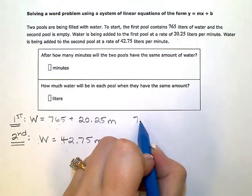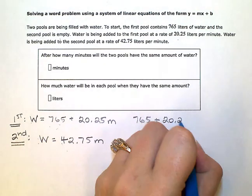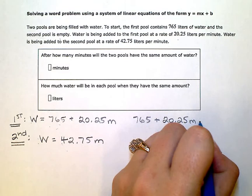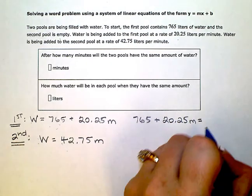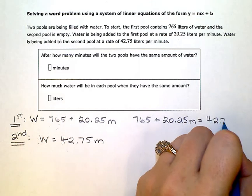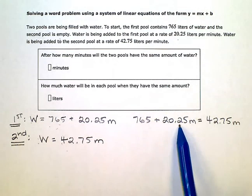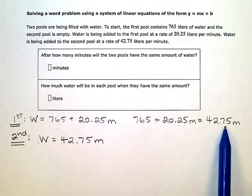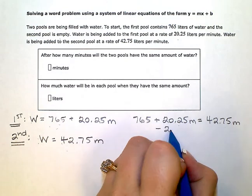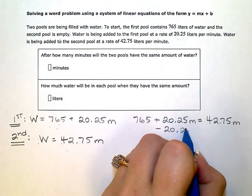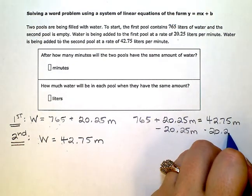So 765 plus 20.25m, I want to be equal to 42.75m. And then I'm just going to solve that equation. I have variable terms on each side of the equals, so I need to zero out one of them. I'm going to get rid of the 20.25 by subtracting from both sides, 20.25m.